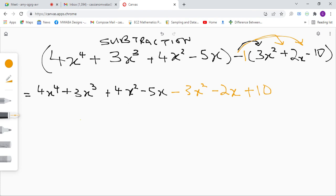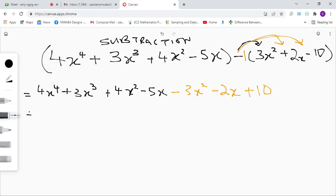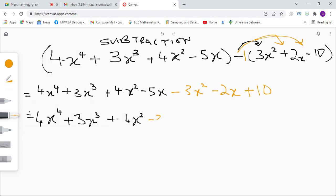Now we group like terms together. So we have 4x to the power of 4 plus 3x cubed, plus 4x squared, minus 3x squared, minus 5x.